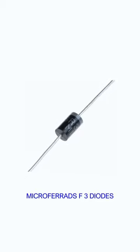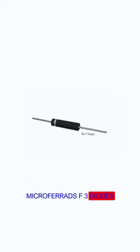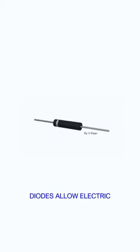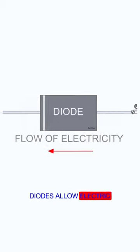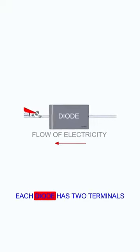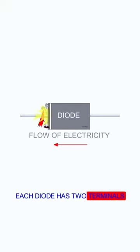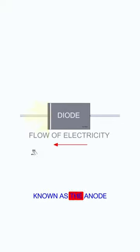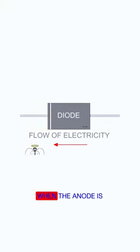3. Diodes. Diodes allow electric current to flow in a single direction only. Each diode has two terminals known as the anode and cathode. When the anode is...